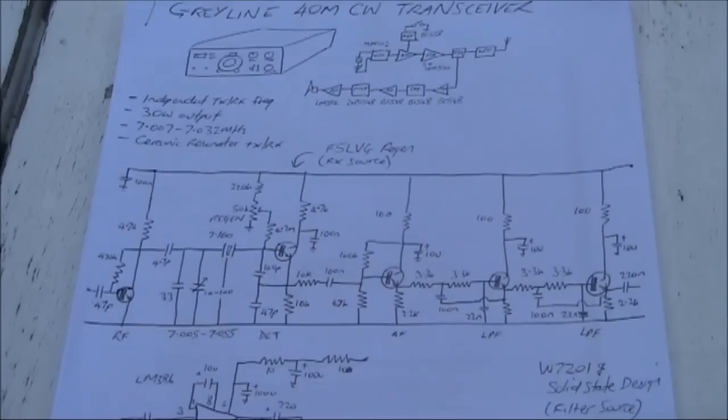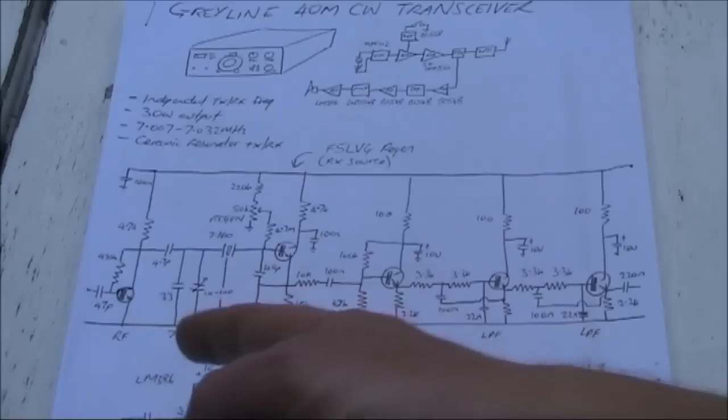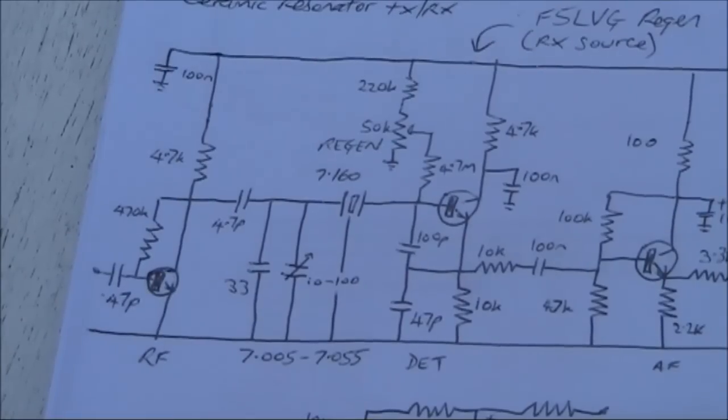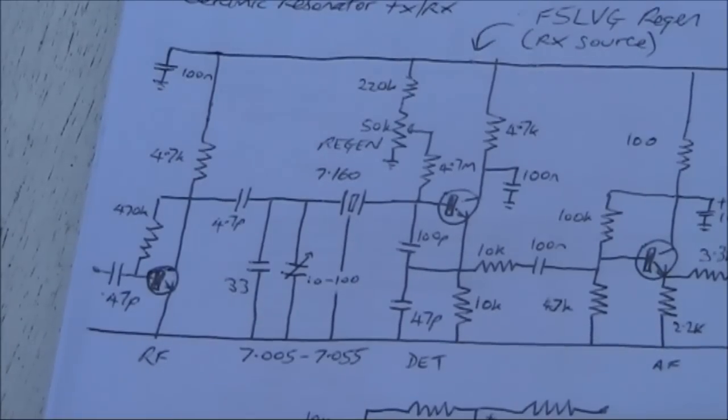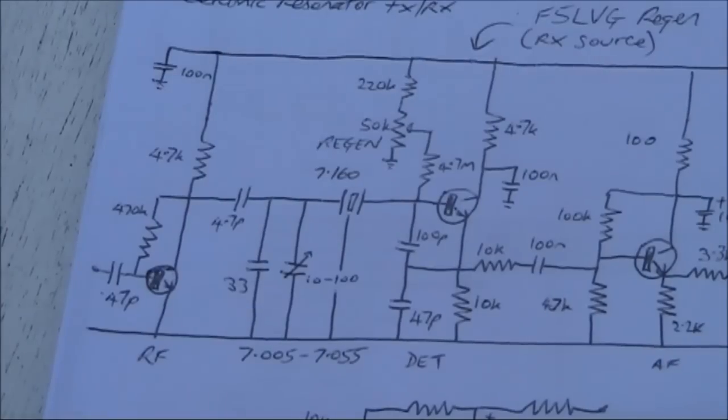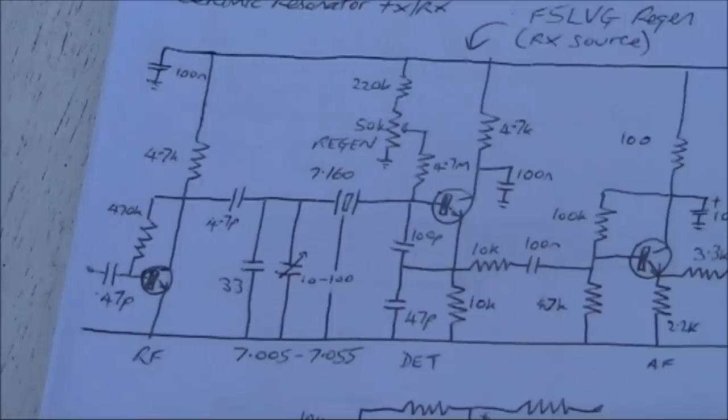A quick look at the circuit. This is the receiver, the same as before. The front-end and oscillating regenerative detector is exactly the same as what I've previously shown.